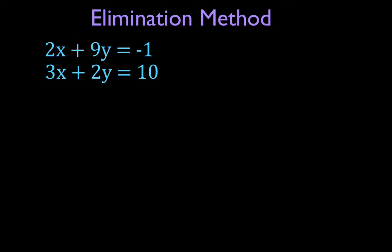What we're going to do is use the elimination method to solve these two linear equations. This is the equation for a line, and this is the equation for a line. What we're doing, in a sense, is finding the point where these two lines cross each other — that is going to be a single point, a single x and y coordinate.